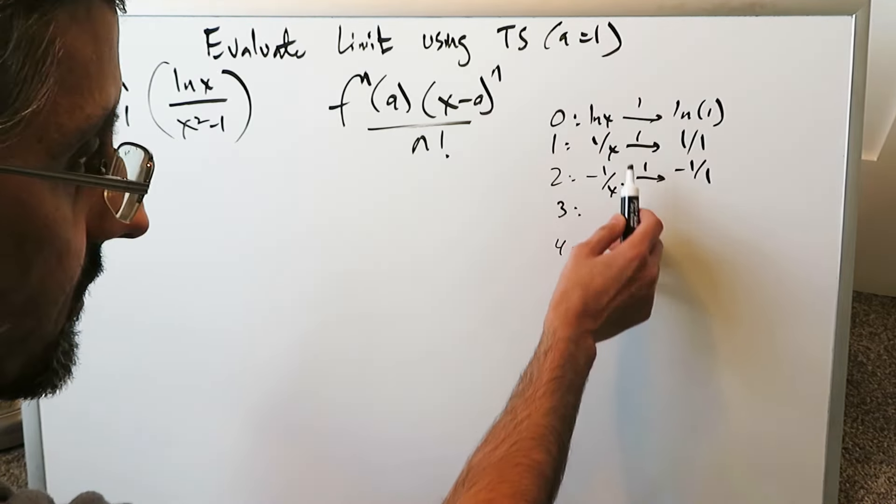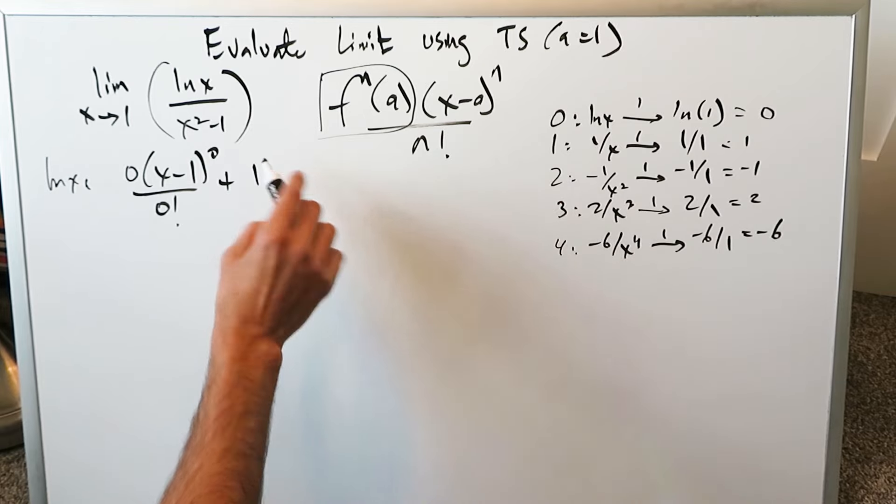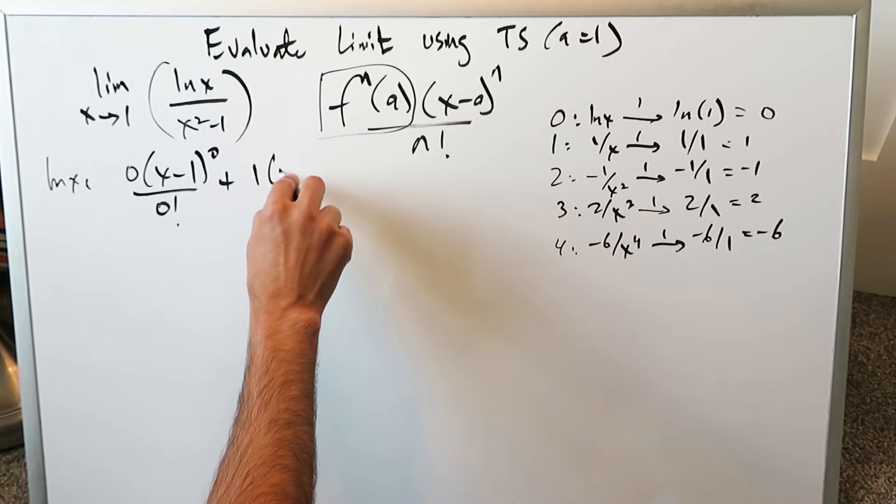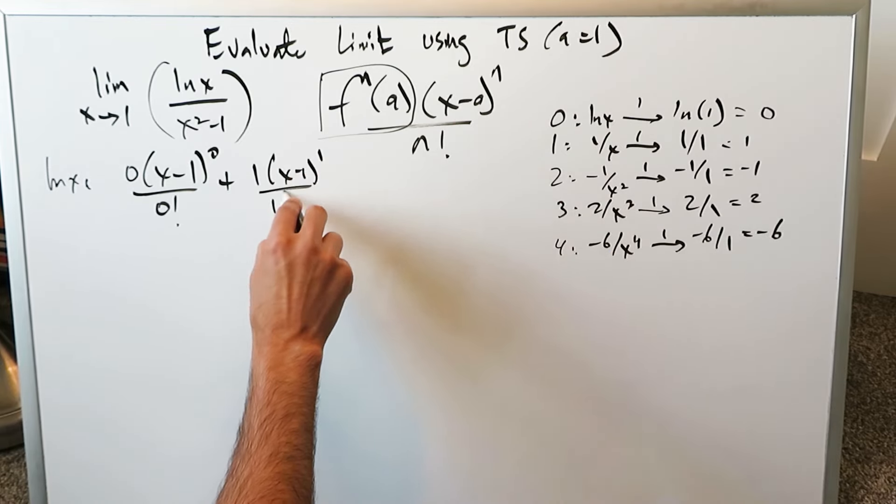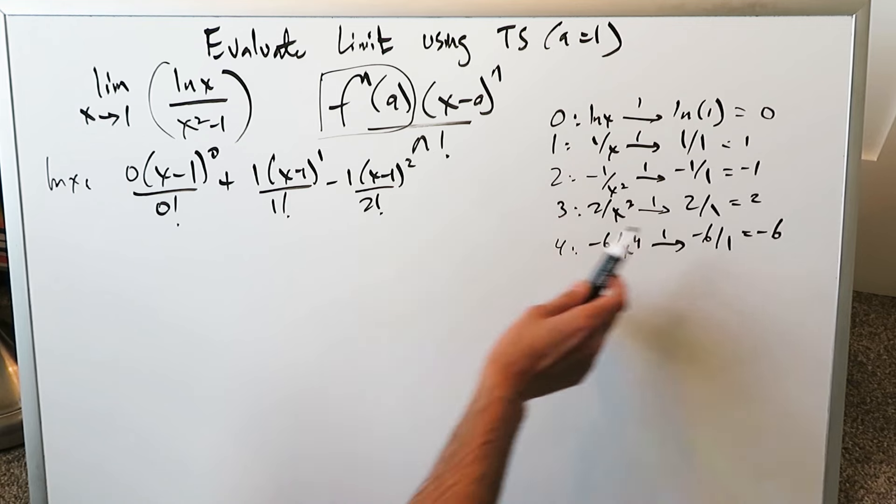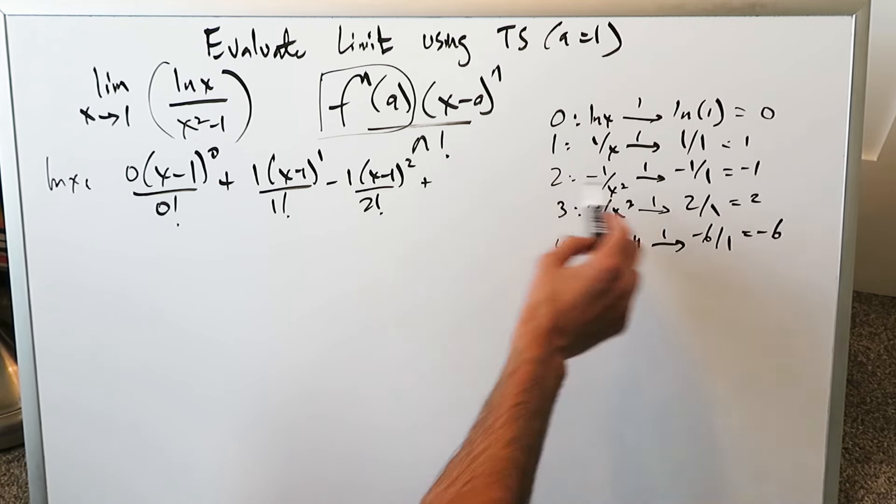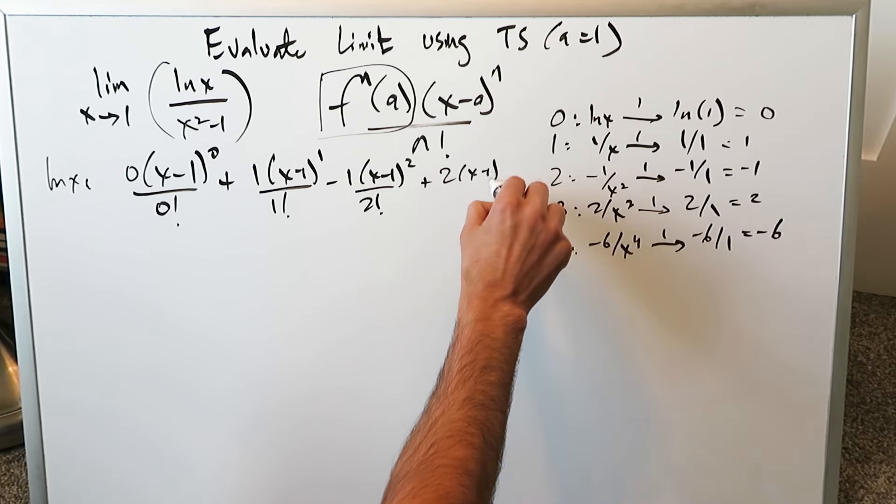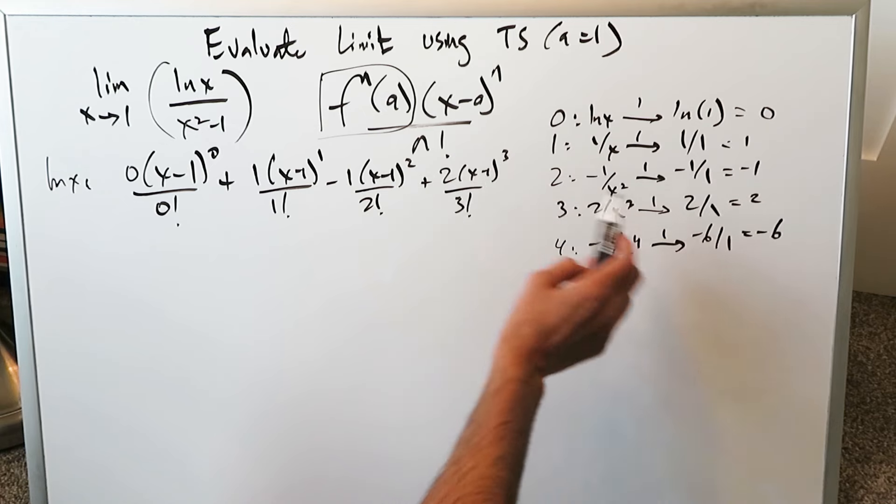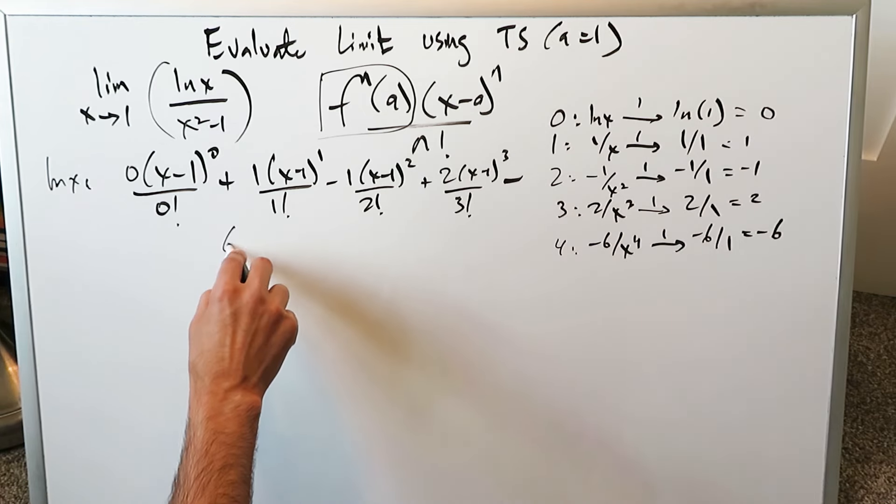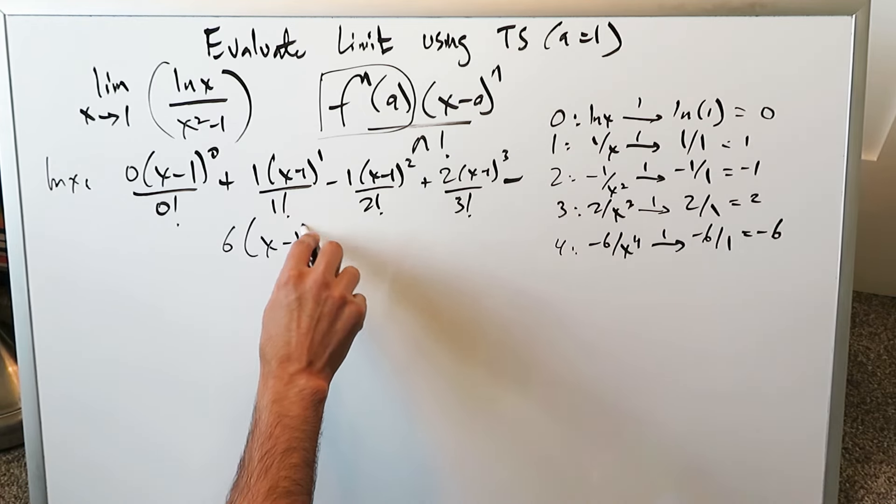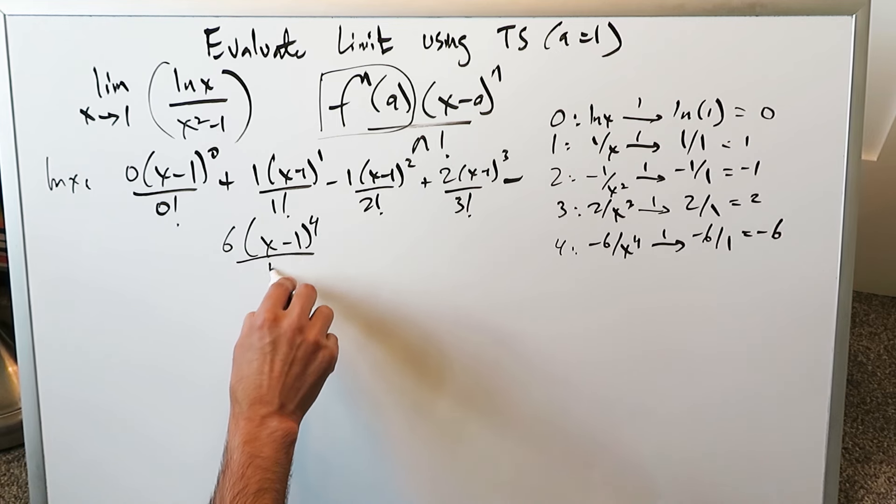You have 0 times x minus 1 to the power of 0 divided by 0 factorial, plus 1, that's your next coefficient, times x minus 1 to the power of 1 divided by 1 factorial, minus 1 times x minus 1 squared over 2, plus x minus 1 cube over 3 factorial, minus 6 times x minus 1 to the power of 4 over 4 factorial.